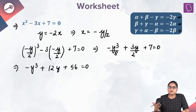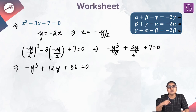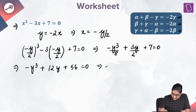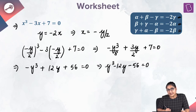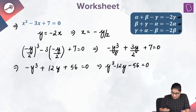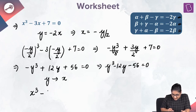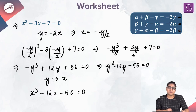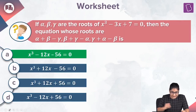The coefficient of y cube is minus 1, so I'm going to multiply this equation by minus 1 so that the coefficient of y cube becomes 1. What I'll get is y cube minus 12y minus 56 equal to 0. Replacing y with x, we get x cube minus 12x minus 56 equal to 0, which is our required equation — option A.